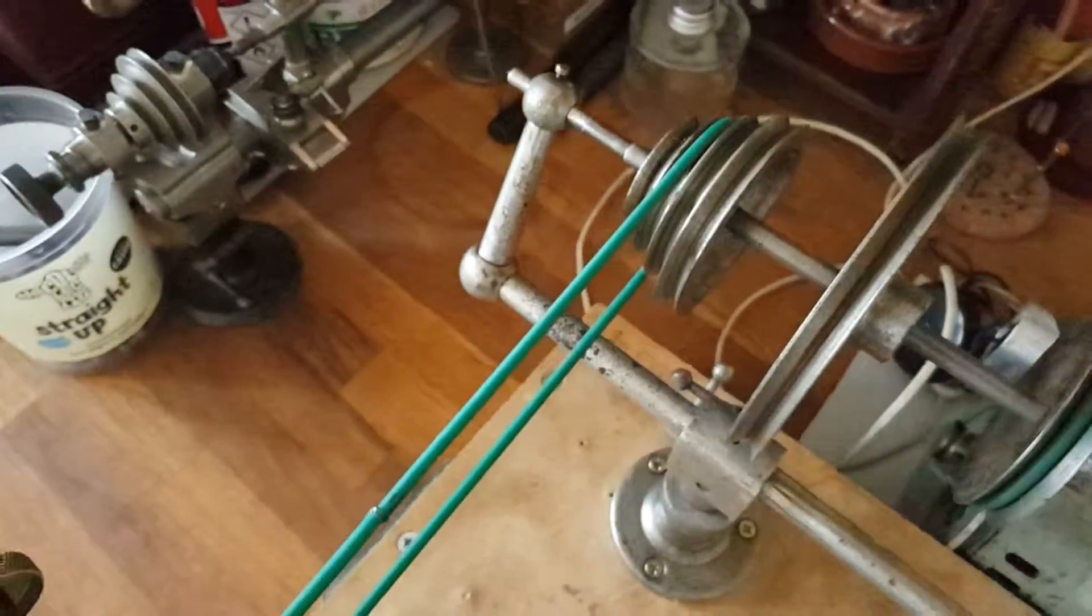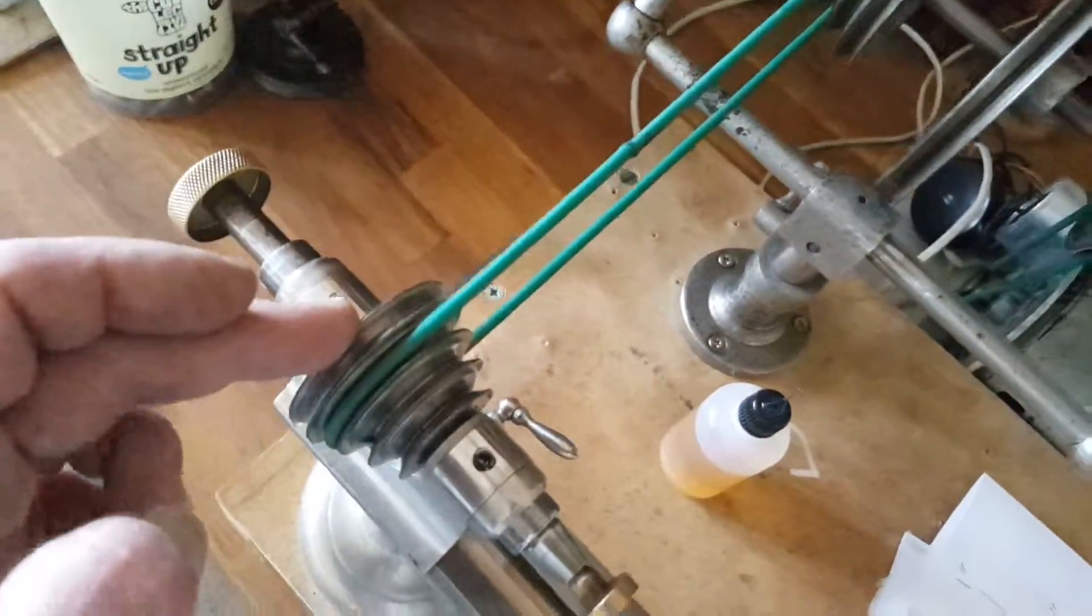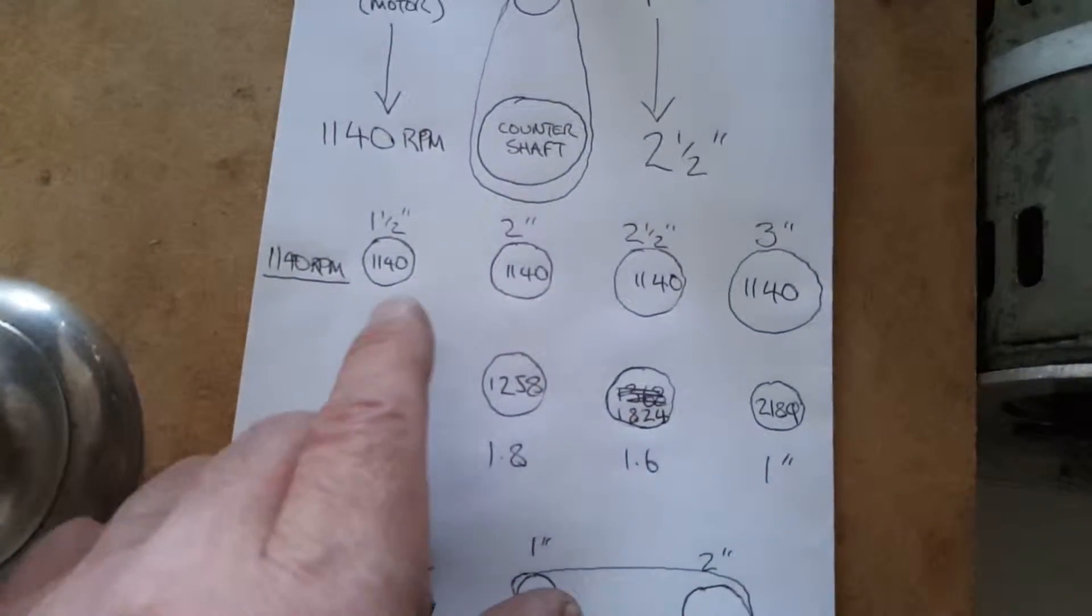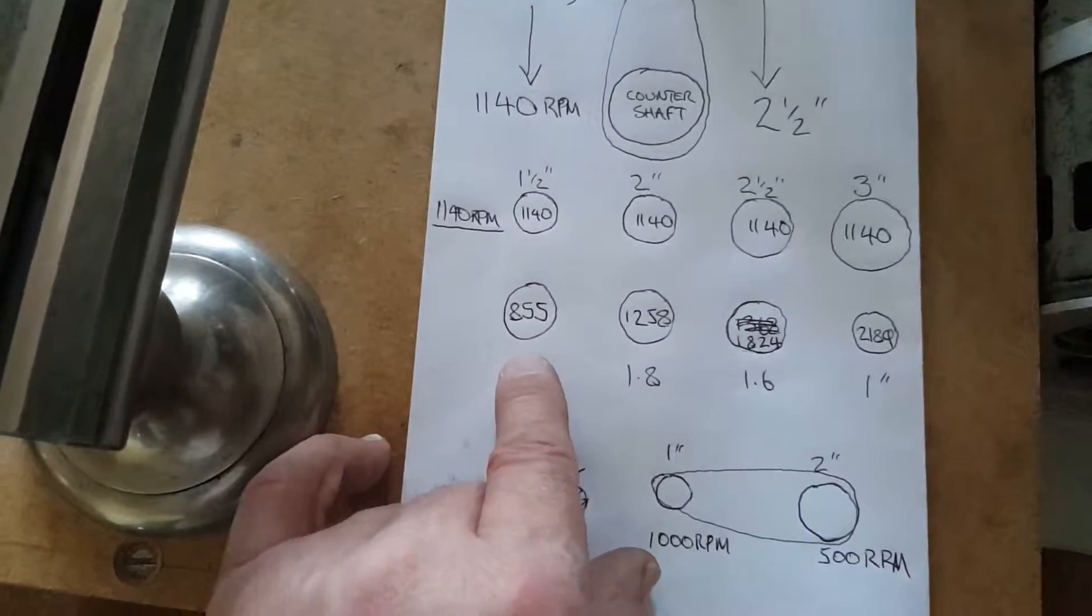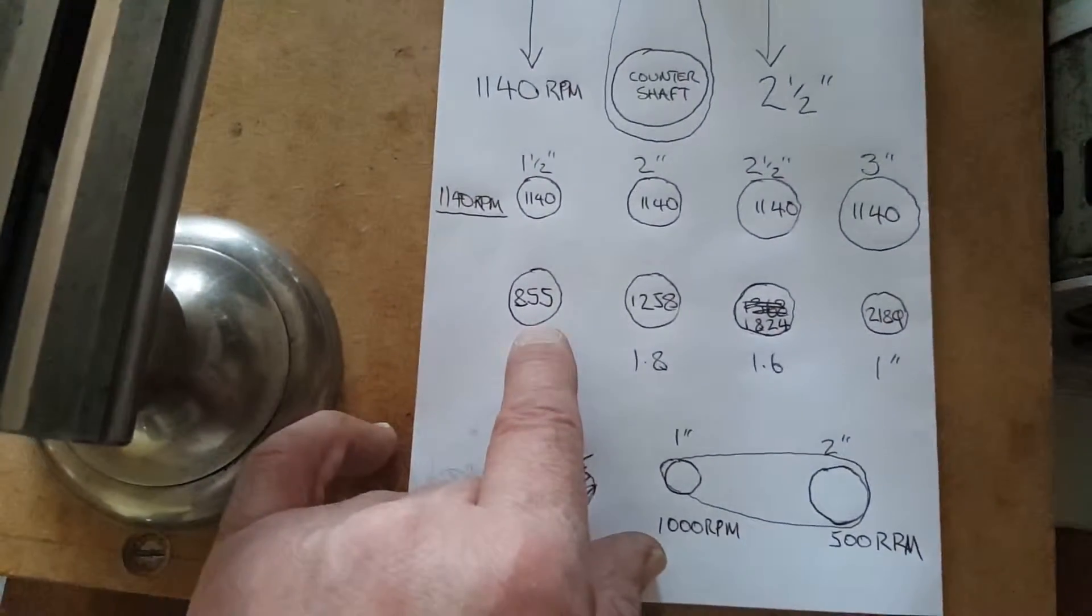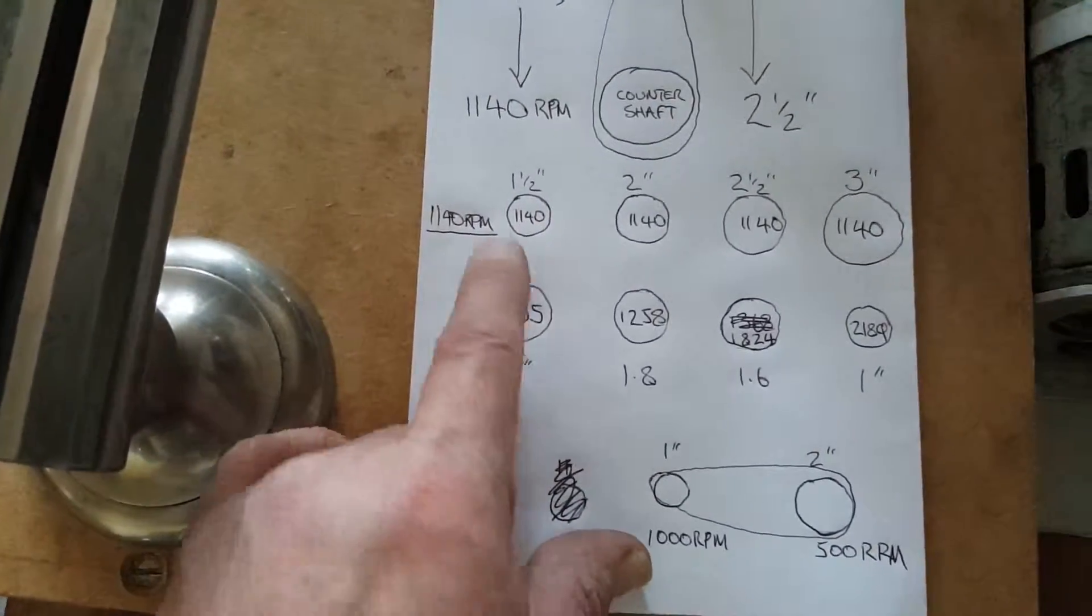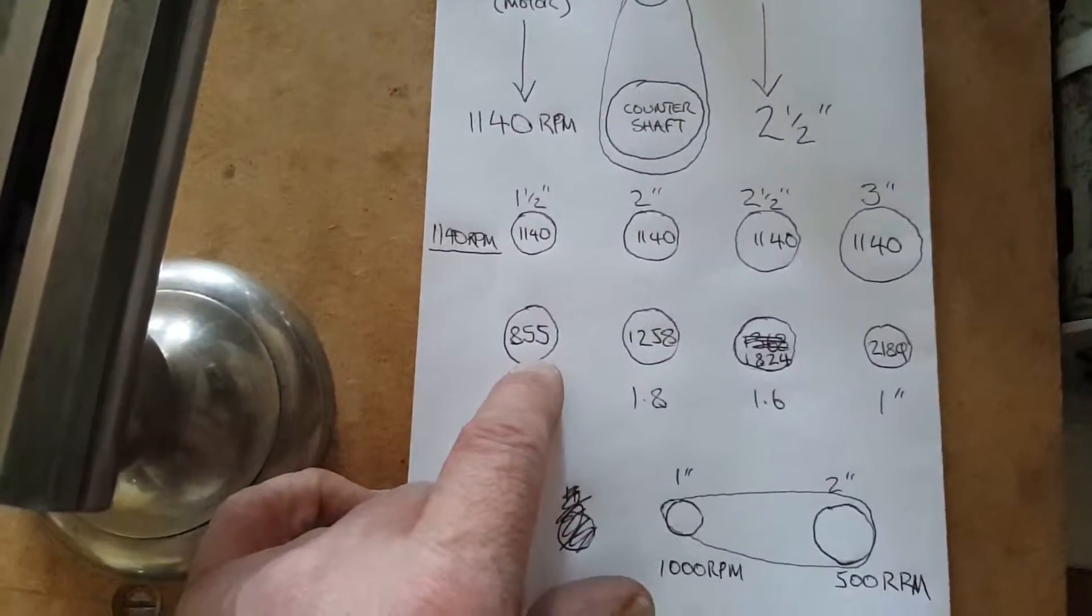Same thing here. So if you've got a smaller pulley driving a bigger pulley, smaller pulley here, which is 1140 on the counter shaft, driving a slightly bigger pulley, so our gear ratio is 1.5 to 2, so it reduces the speed to 855 RPM at the headstock.